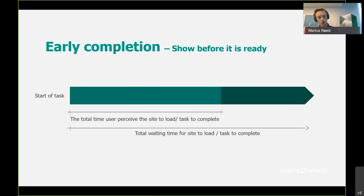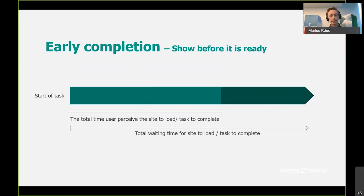The opposite technique is called early completion, which is about showing the user something before it's ready or finished loading. This is used mostly in video streaming, where the video starts before the entire video is finished loading. You also have progressive images, used by Pinterest and retail e-commerce sites with a lot of product images, where you start showing a pixelated blurry image and progressively show the high resolution image. Both of these techniques are quite common, but not all of you are actually using them on your web pages.